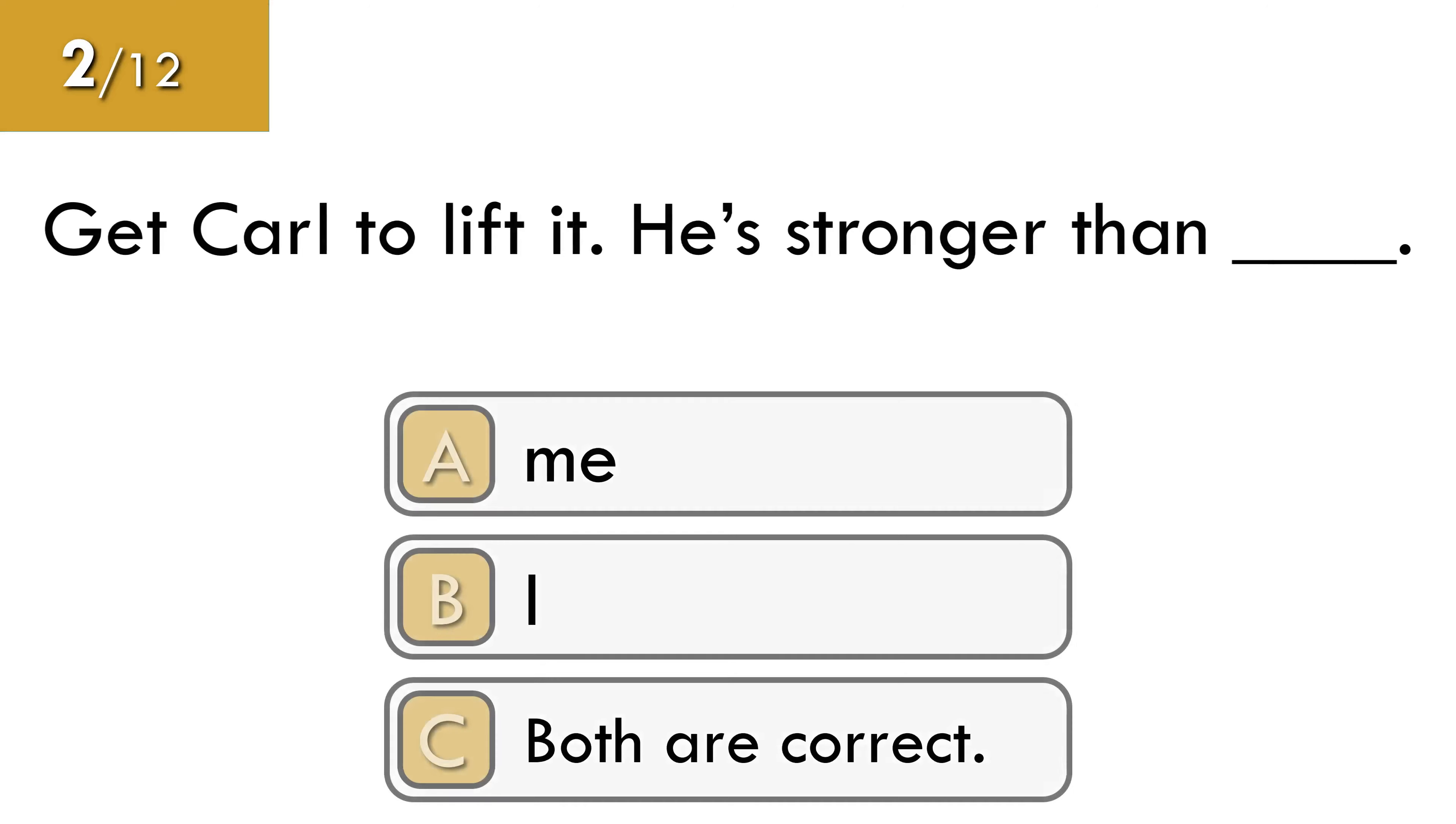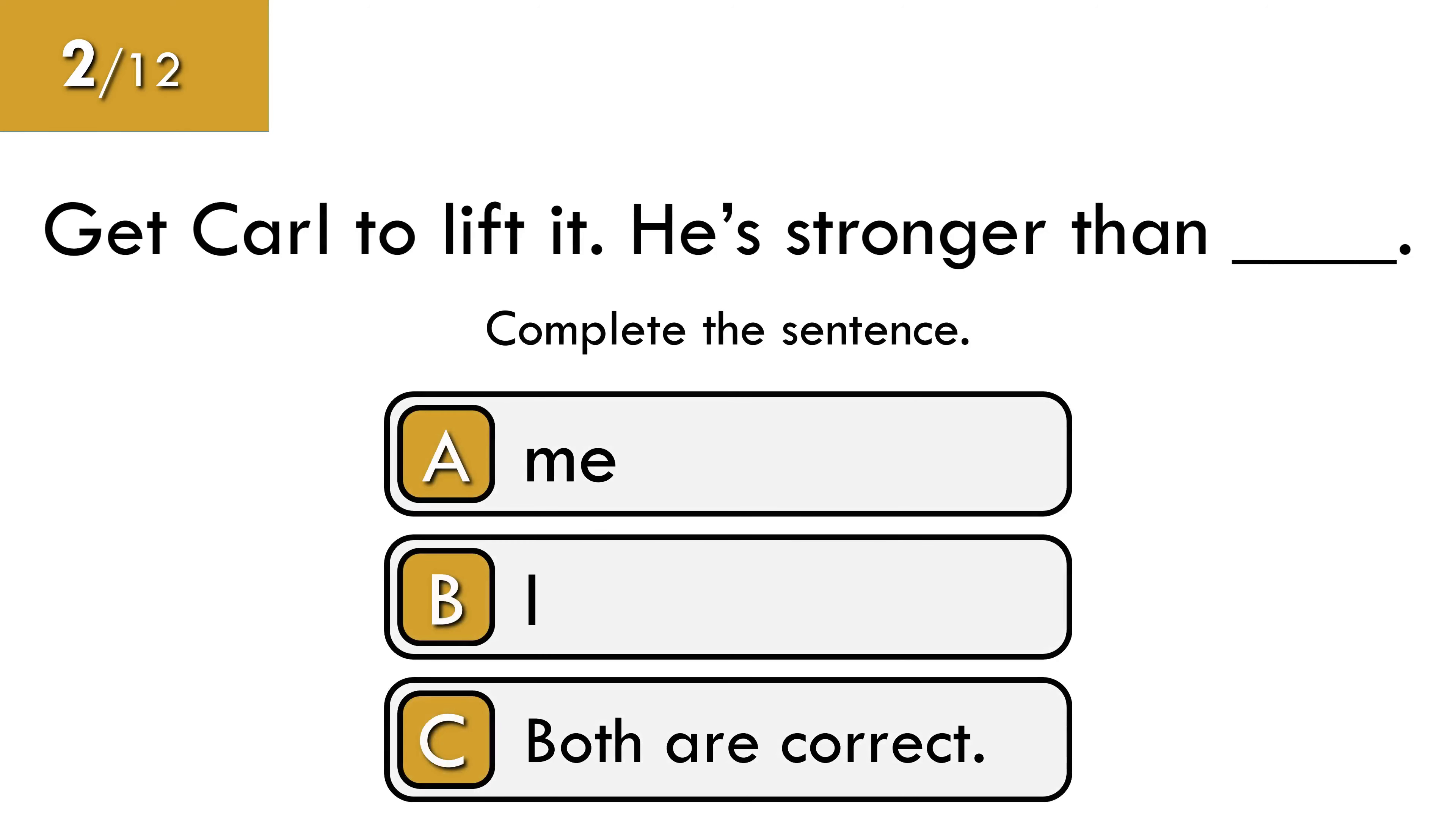Number 2. It's easy, isn't it? But a lot of English learners make mistakes in this type of sentence. The correct answer is me. We use then to introduce the second person or thing in the comparison. If the second person takes the form of a personal pronoun, we normally use the object form of the pronoun.